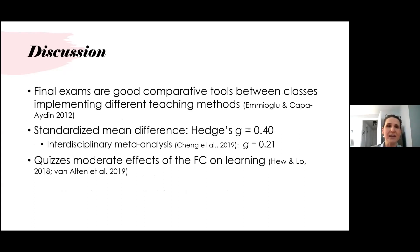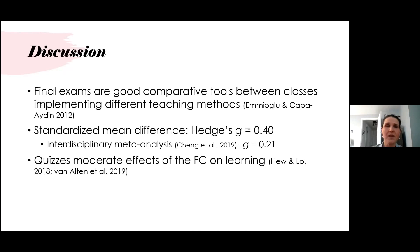Our Hedges' g standardized mean difference between class formats was 0.40, which falls on the higher end of the range of effect sizes obtained in other meta-analyses comparing flipped and lecture classes. Our exploratory results suggested a potential role of weekly quizzes as a driver of the effectiveness of the flipped classroom, consistent with other meta-analyses that have similarly found that quizzes attenuate the advantage of the flipped classroom. Further research should explore the role of regular class quizzes in traditional intro stats courses.